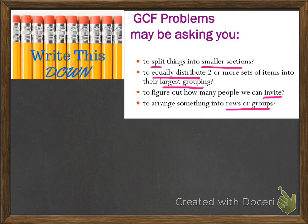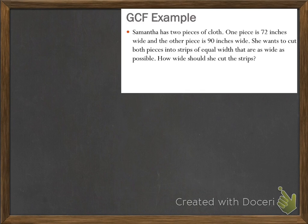Now we'll look at the GCF example. Samantha has two pieces of cloth — one piece is 72 inches wide and the other is 90 inches wide. She wants to cut both pieces into strips of equal width that are as wide as possible. How wide should she cut the strips? We're going to ask ourselves those three key questions again: What do I know? What do I need to find out? And what's my plan?